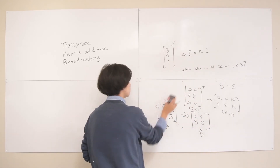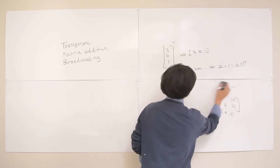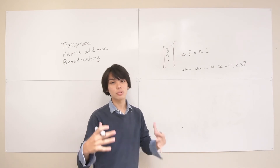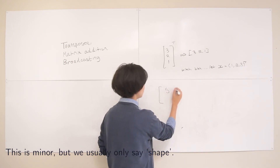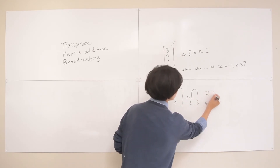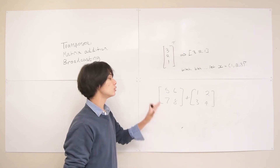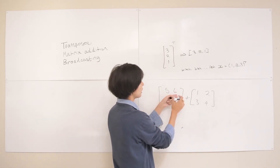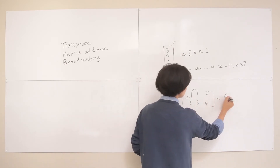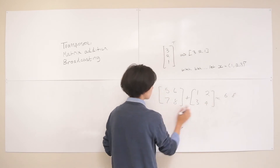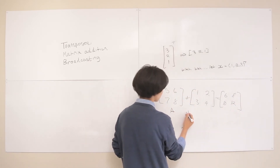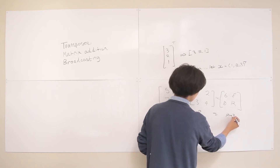Next, matrix addition — or vector addition. Whenever you're adding matrices or vectors, they need to be the same size or shape, and you do it element-wise. Say we add [5, 6; 7, 8] to [1, 2; 3, 4]: we add each corresponding element to get [6, 8; 10, 12]. So that's A plus B — same shape result.